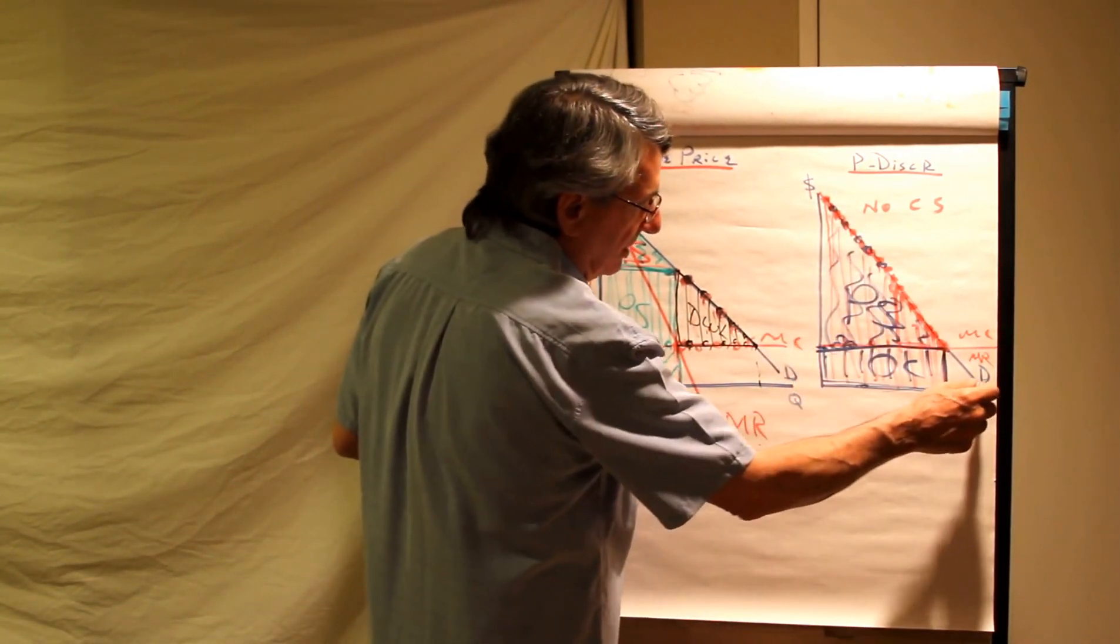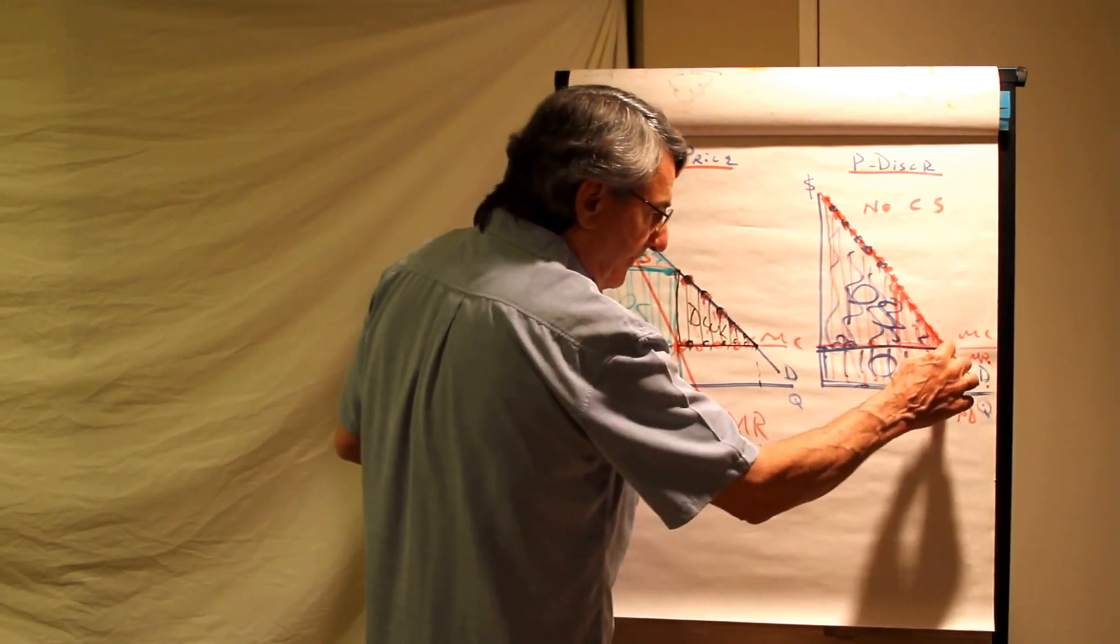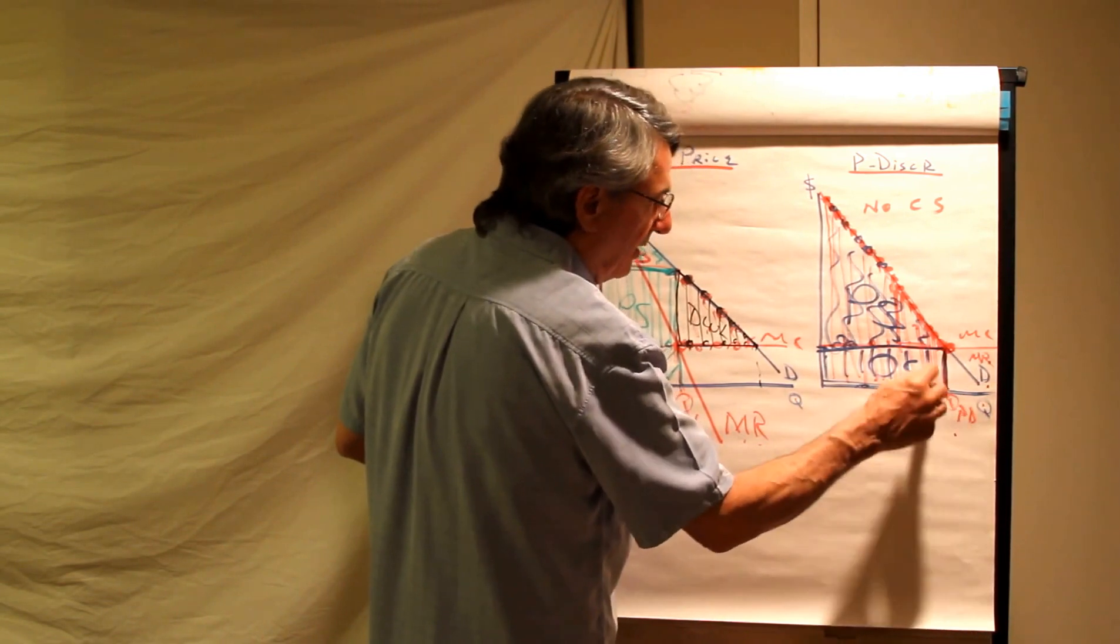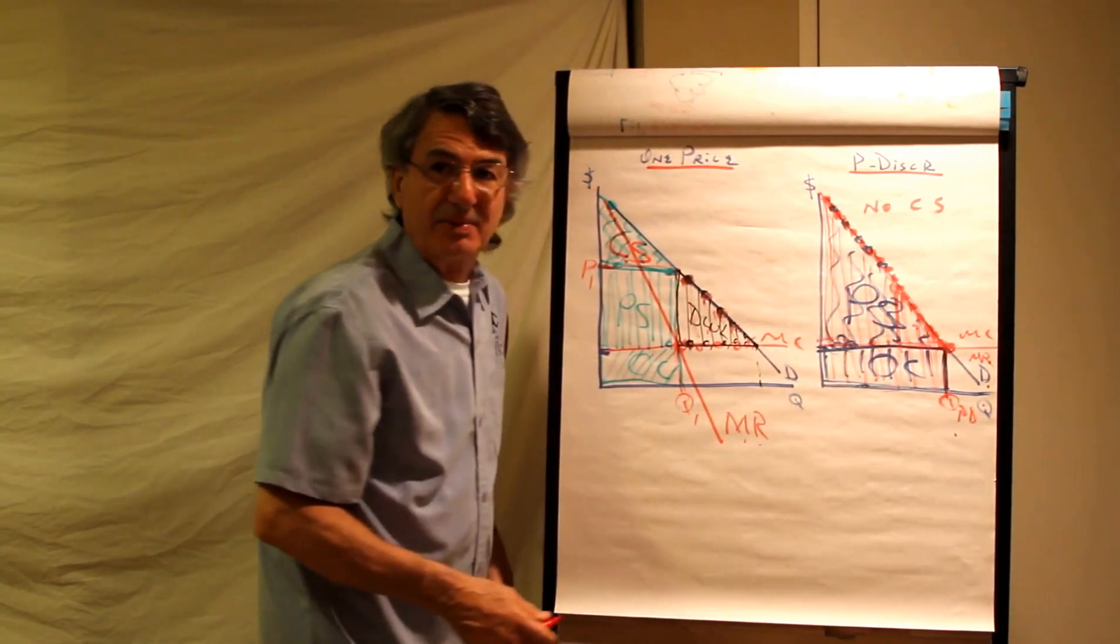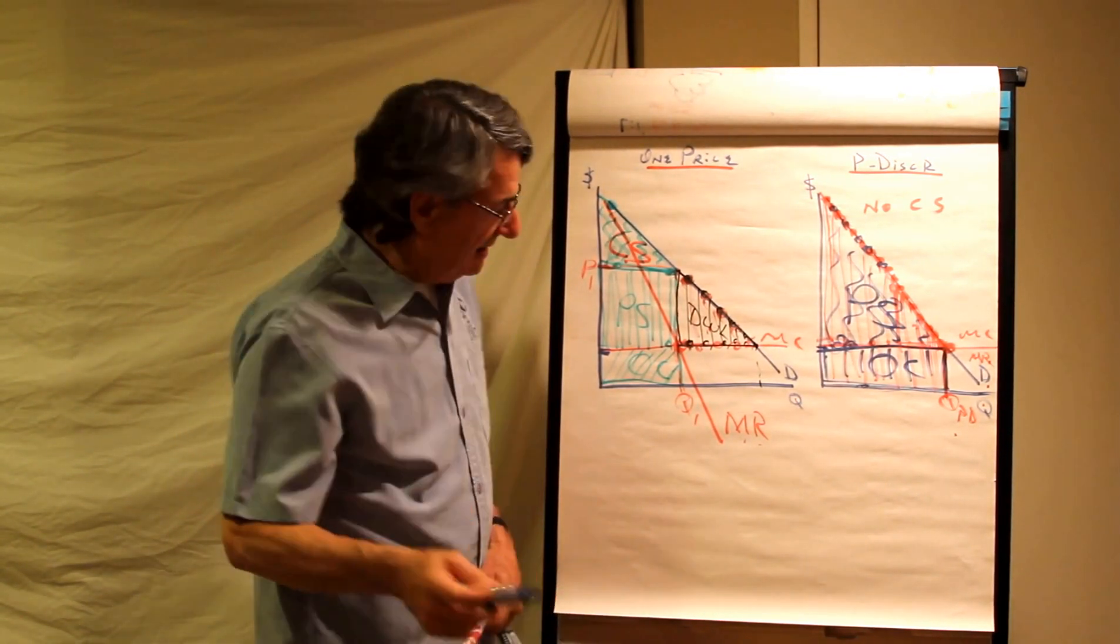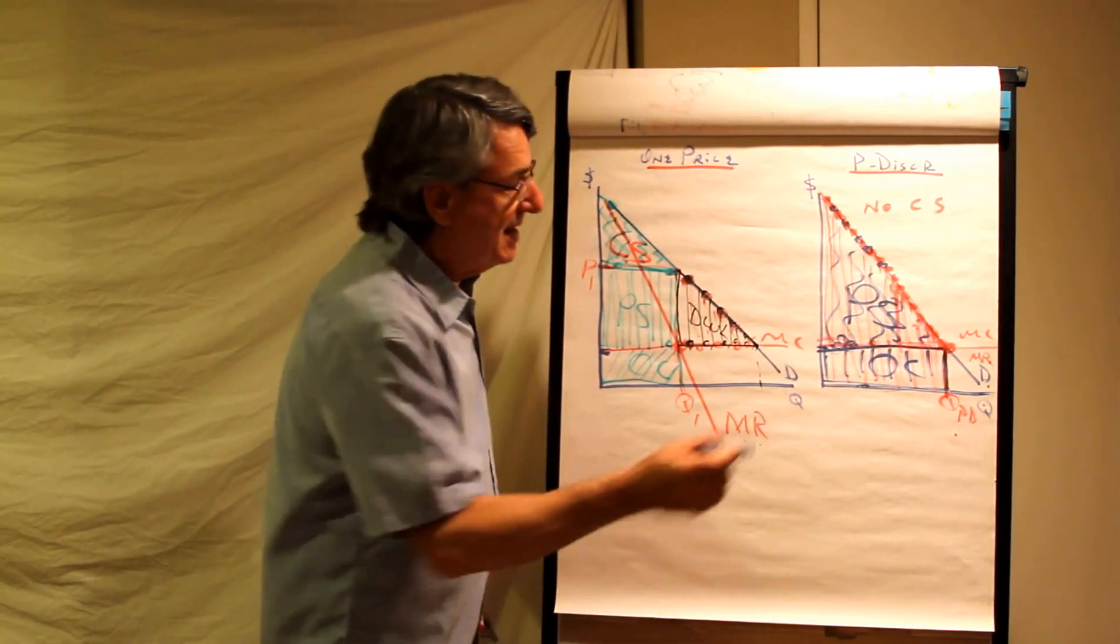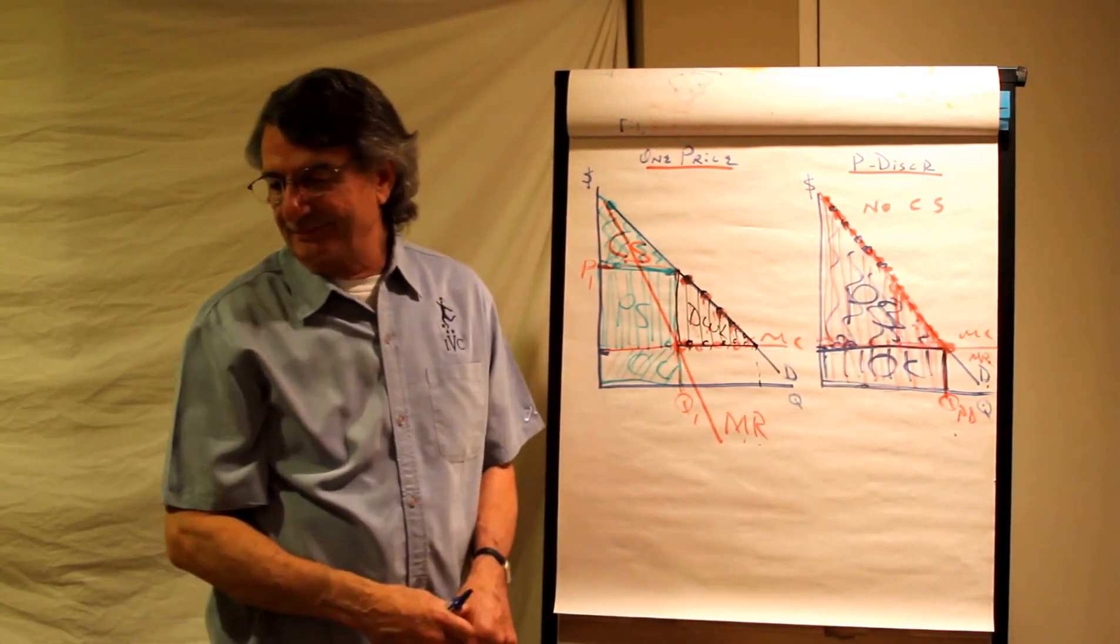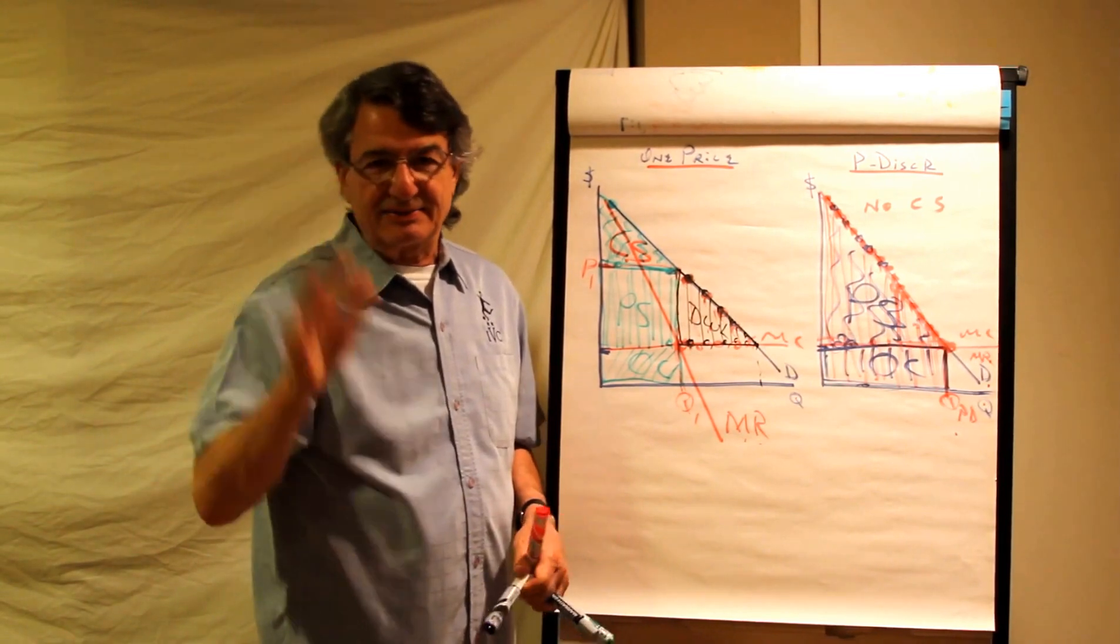But with perfect price discrimination, the demand curve which shows price is marginal revenue, they will produce where marginal revenue equals marginal cost, that's that quantity, and they have taken all of the consumer surplus, but they have eliminated, consumer surplus, close, no cigar baby, they have eliminated the dead weight loss. That's right. Grazie.